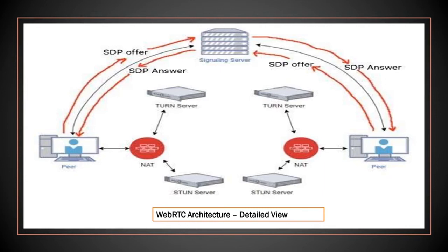Through this process, both user A and user B can get each other's details like IP address, video, audio, codec, etc. After this process, remaining video and audio communication will happen through WebRTC APIs, which does not require any signaling server at all. The signaling server is only used to exchange client details in session descriptions.